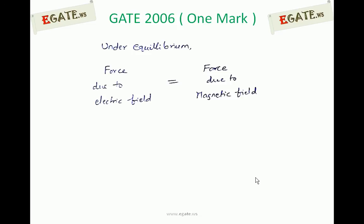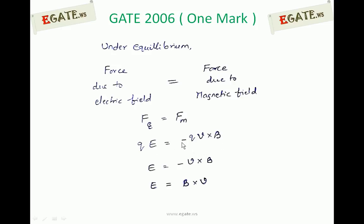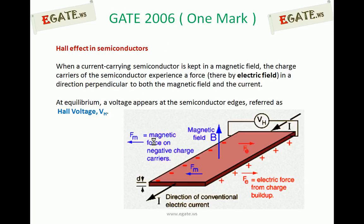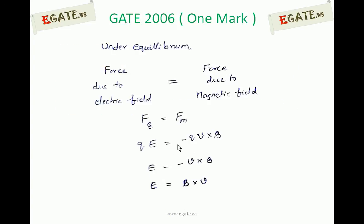Under equilibrium, the force due to the electric field is equal to the force due to the magnetic field. Force due to the magnetic field is in the negative X-axis and force due to the electric field is in the positive X-axis. So even though both are the same in magnitude, they are in opposite directions. That is why this minus sign has been taken.